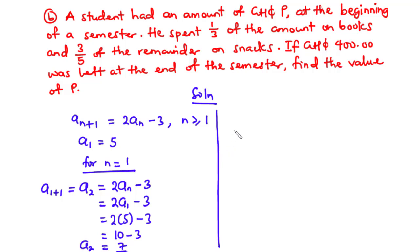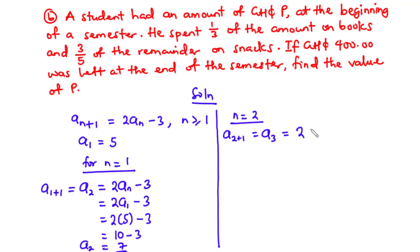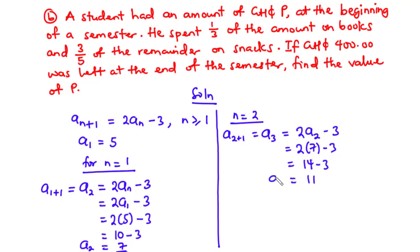Now let's find a_3. To find a_3, we set n equal to 2. So a_(2+1) equals a_3 equals 2 times a_2 minus 3. That is 2 times 7 minus 3, which is 14 minus 3. Therefore a_3 is equal to 11.